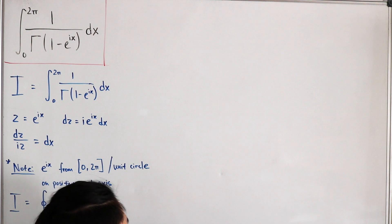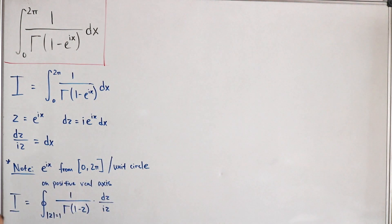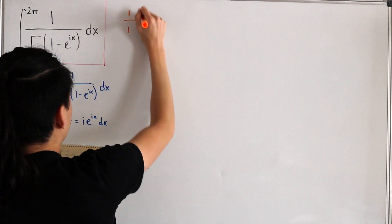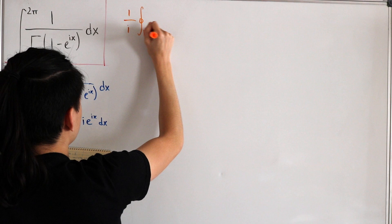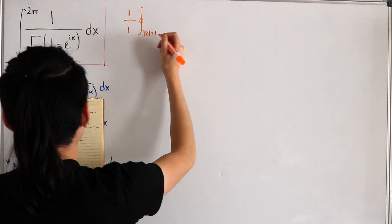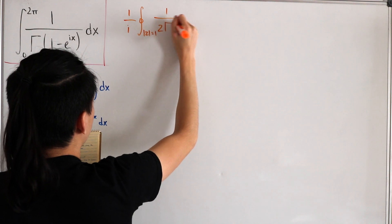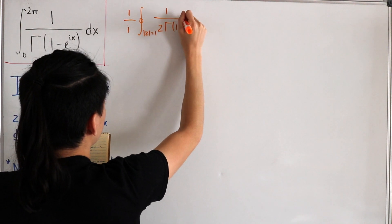If I just simplify it a little better, what I can do is I can actually factor out the i from outside of our integral. So we would have one over i, then our contour integral from our unit circle z equals one of one divided by z times gamma of one subtract z dz.